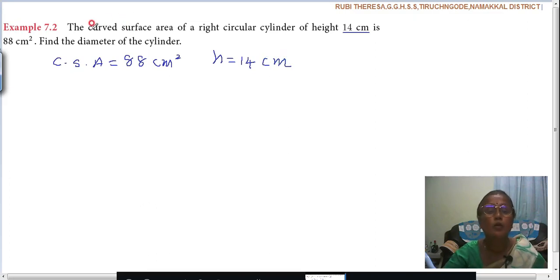Do you follow how you read the problem? The curved surface area of a right circular cylinder is 88 centimeters square of height 14 centimeters. CSA and height. Find the diameter of the cylinder. Diameter, they are asking the diameter, not the radius.